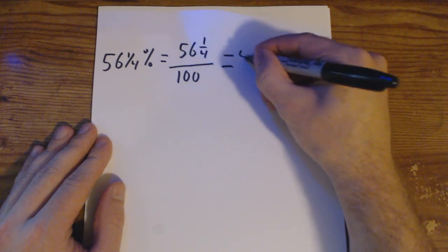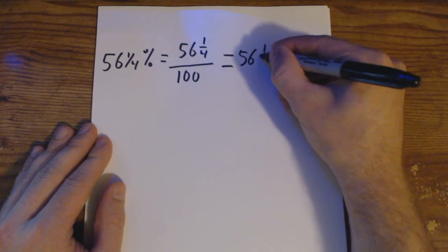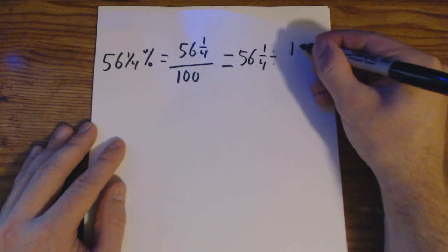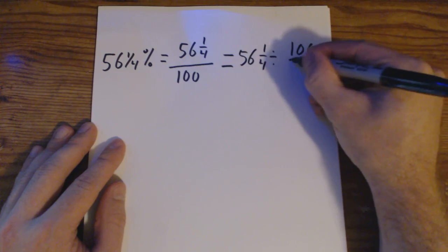So, we have our 56 and 1 fourth divided by 100 over 1.